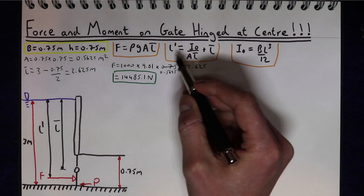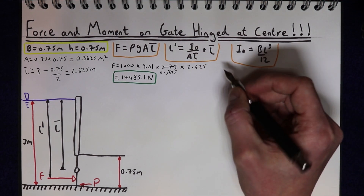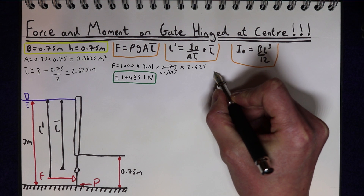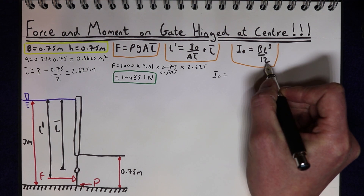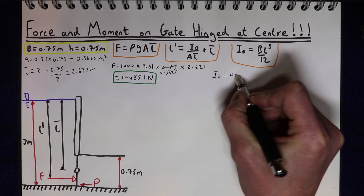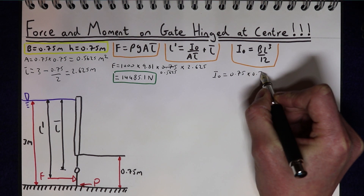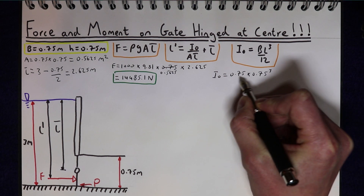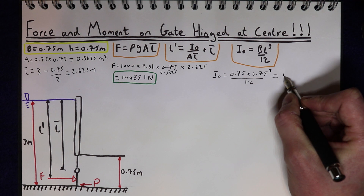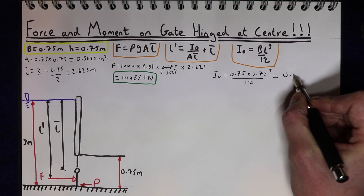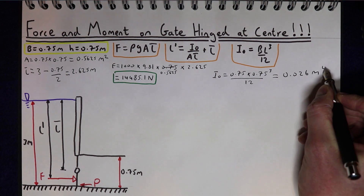Next we want to work out the location at which the force is acting, but first we need the second moment of area. The second moment of area I equals B times L cubed over 12, where B is 0.75 and L is 0.75. That gives us I equals 0.026 metres to the power of 4.